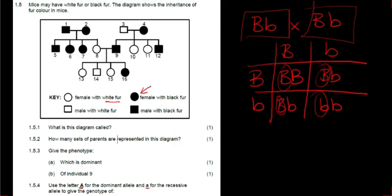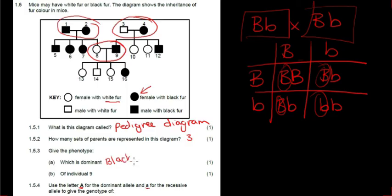What is this type of diagram called? It is called a pedigree diagram. How many sets of parents are represented in this diagram? There's one set over there, another set over there, and one more set over there, so there are three parents. Give the phenotype - which is dominant? The dominant phenotype would be black, and if they asked for recessive, that would be white.